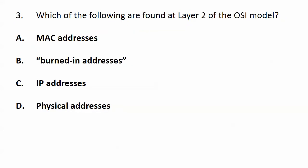Question three: which of these are found at layer two of the OSI model? MAC, burned-in, IP, and physical addresses are your choices.